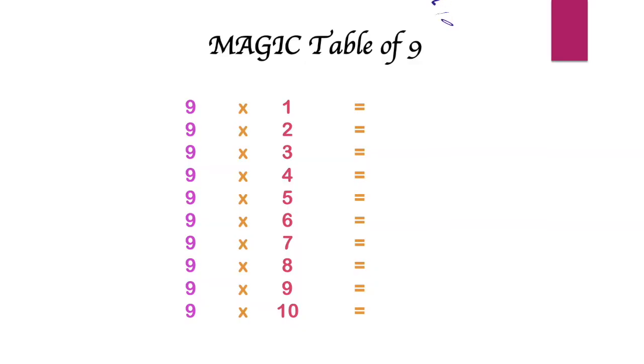Write all the numbers from 0 to 9 in ascending order. Then write all the numbers from 9 to 0 in descending order. Like this.